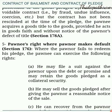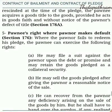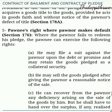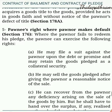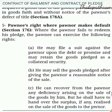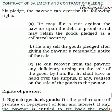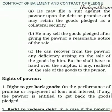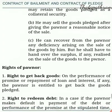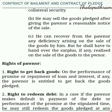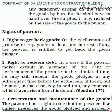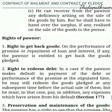Fifth, pawnee's right where the pawner makes default: Section 176. Where the pawner fails to redeem his pledge, the pawnee can exercise the following rights: A. He may file a suit against the pawner upon the debt or promise and may retain the goods pledged as collateral security. B. He may sell the goods pledged after giving the pawner a reasonable notice of the sale. C. He can recover from the pawner any deficiency arising on the sale of the goods by him, but he shall have to hand over the surplus, if any, arising on the sale of goods to the pawner.